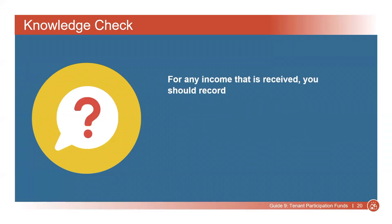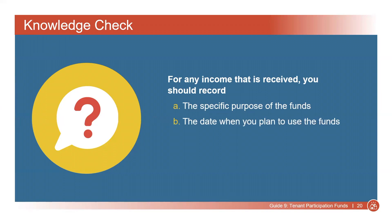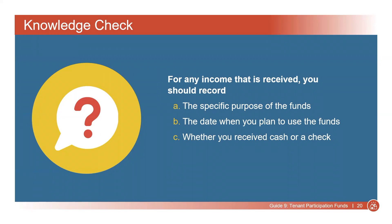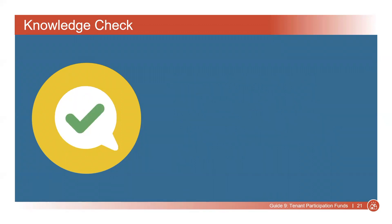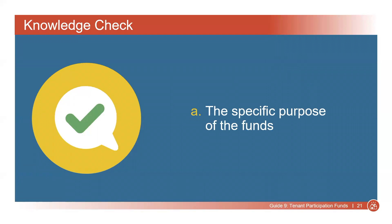For any income that is received, you should record: A. The specific purpose of the funds; B. The date when you plan to use the funds; C. Whether you received cash or a check; or D. All of the above. The answer is A, the specific purpose of the funds. You can see the full list in the guide, which also includes the source of the money, the date the funds were received, and the date they were deposited with a copy of the bank receipt.